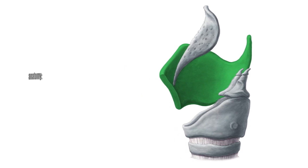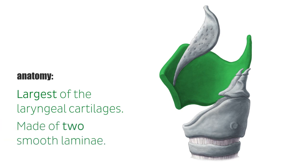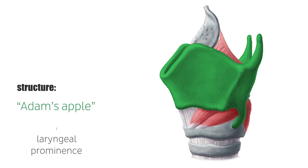The thyroid cartilage is made of two smooth laminae, of which the two lower thirds fuse in the midline, while most of the superior third remains unfused and creates the laryngeal notch. The thyroid cartilage makes the well-known Adam's apple, due to the laryngeal prominence caused by the fused laminae.